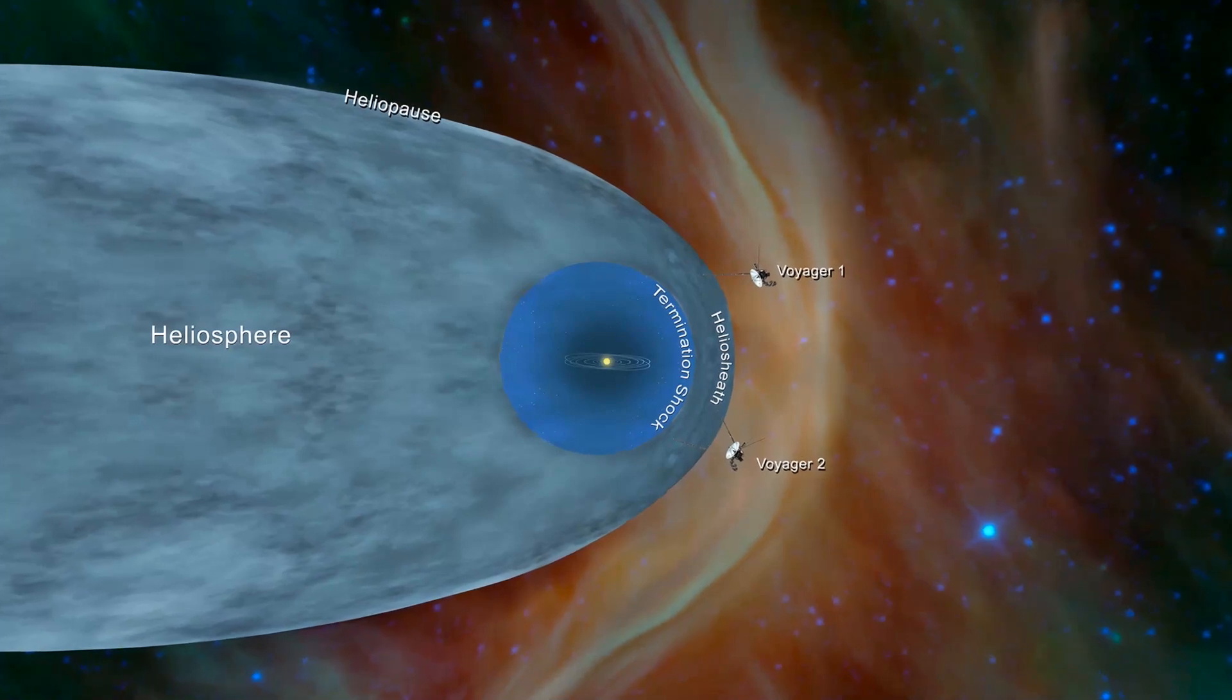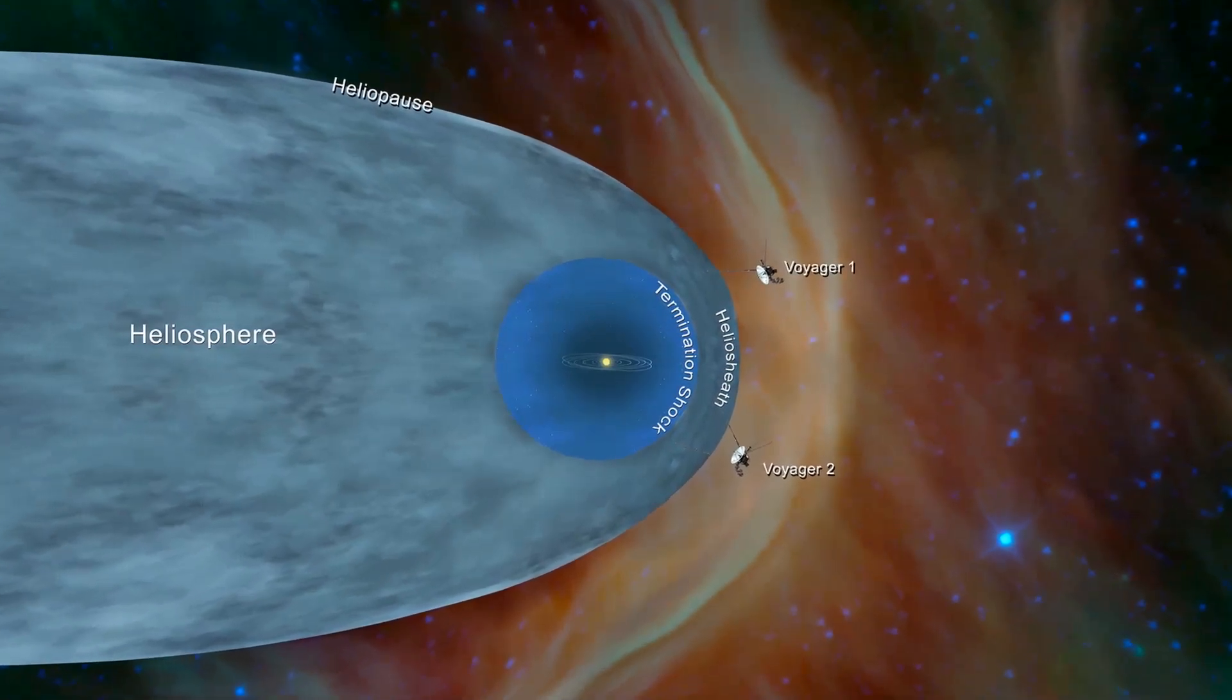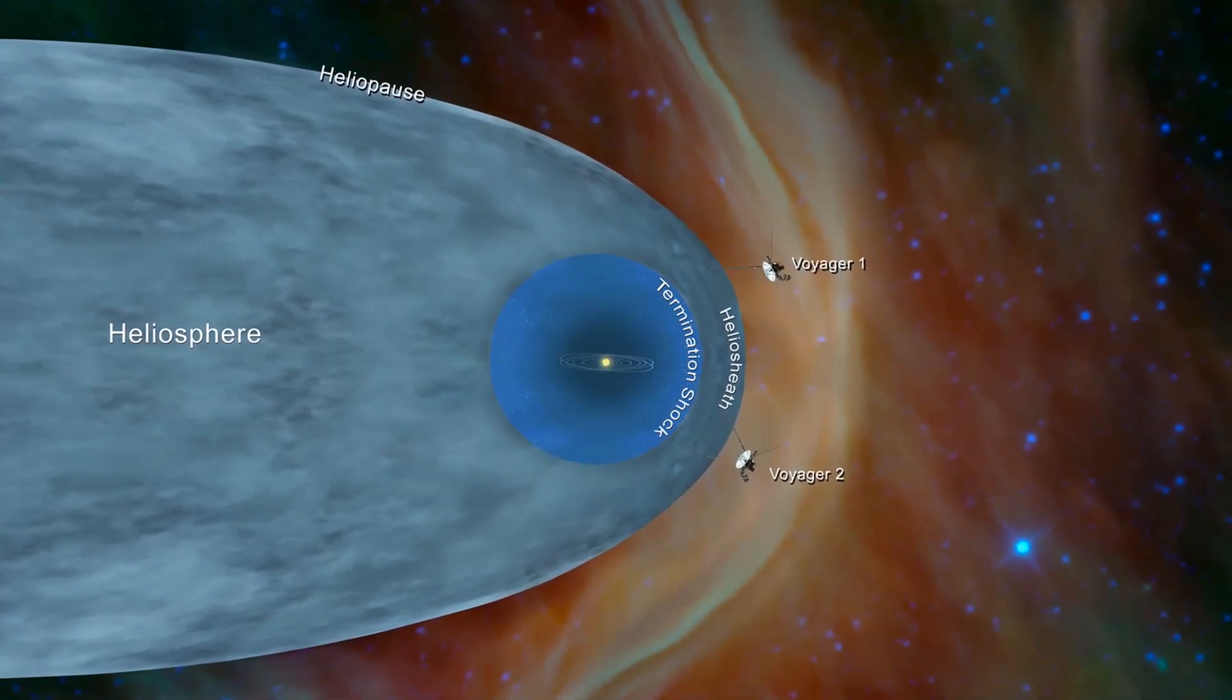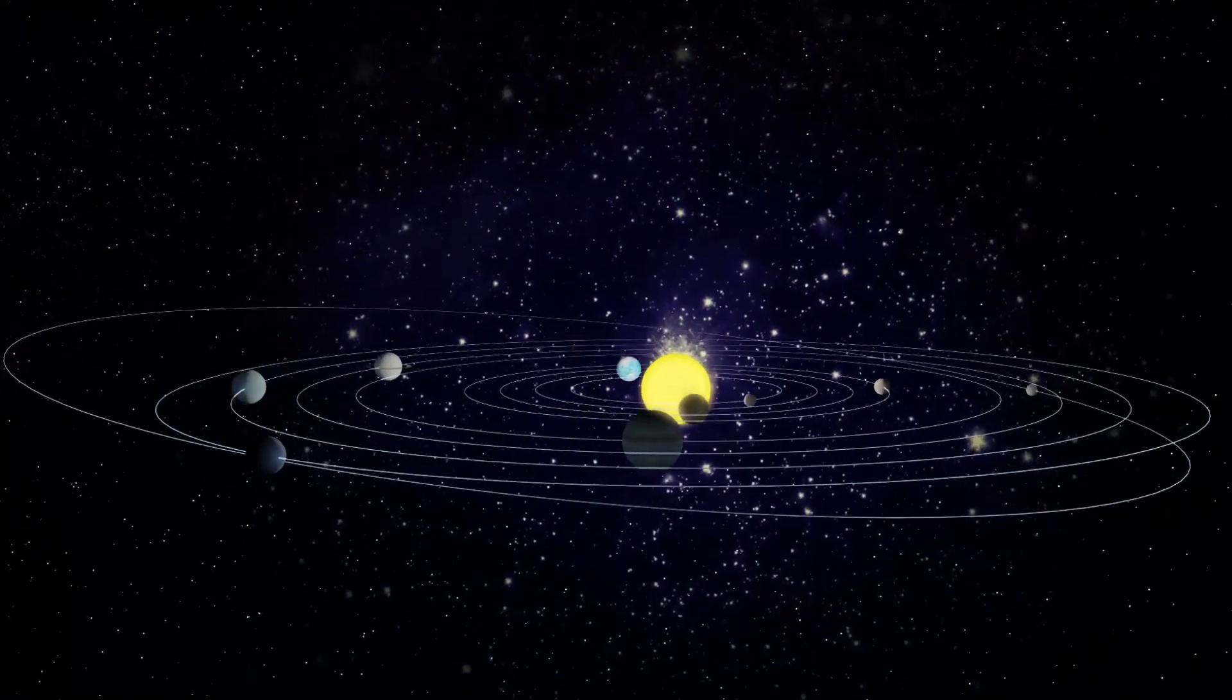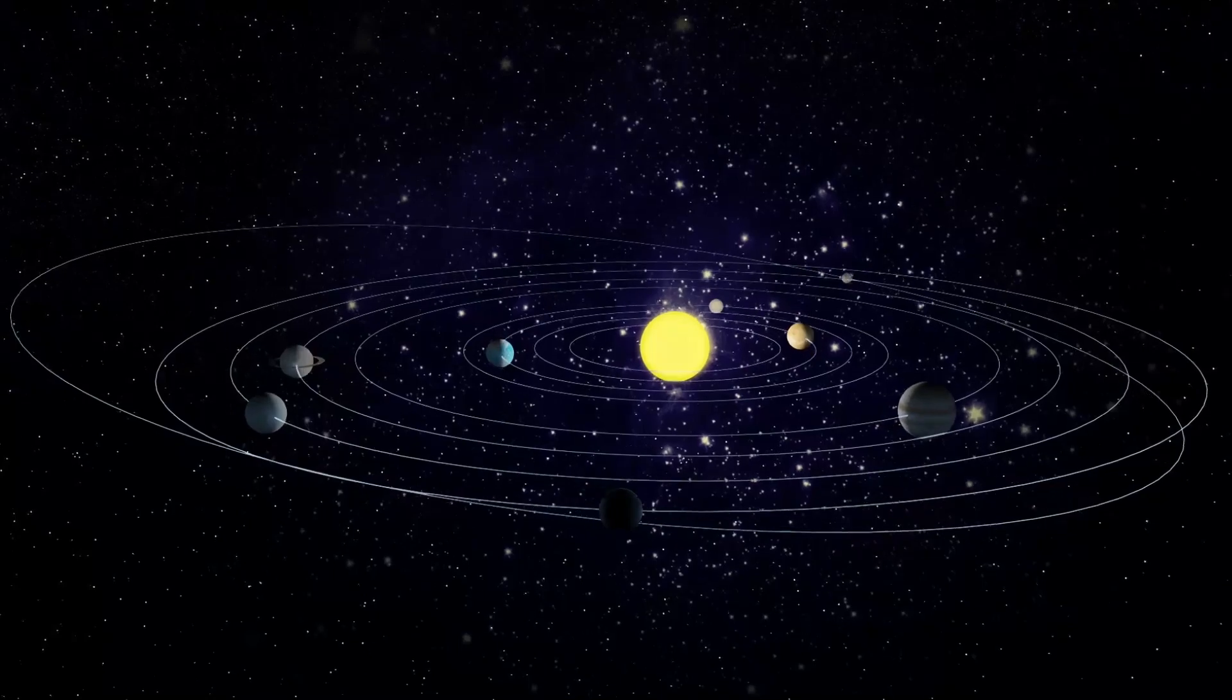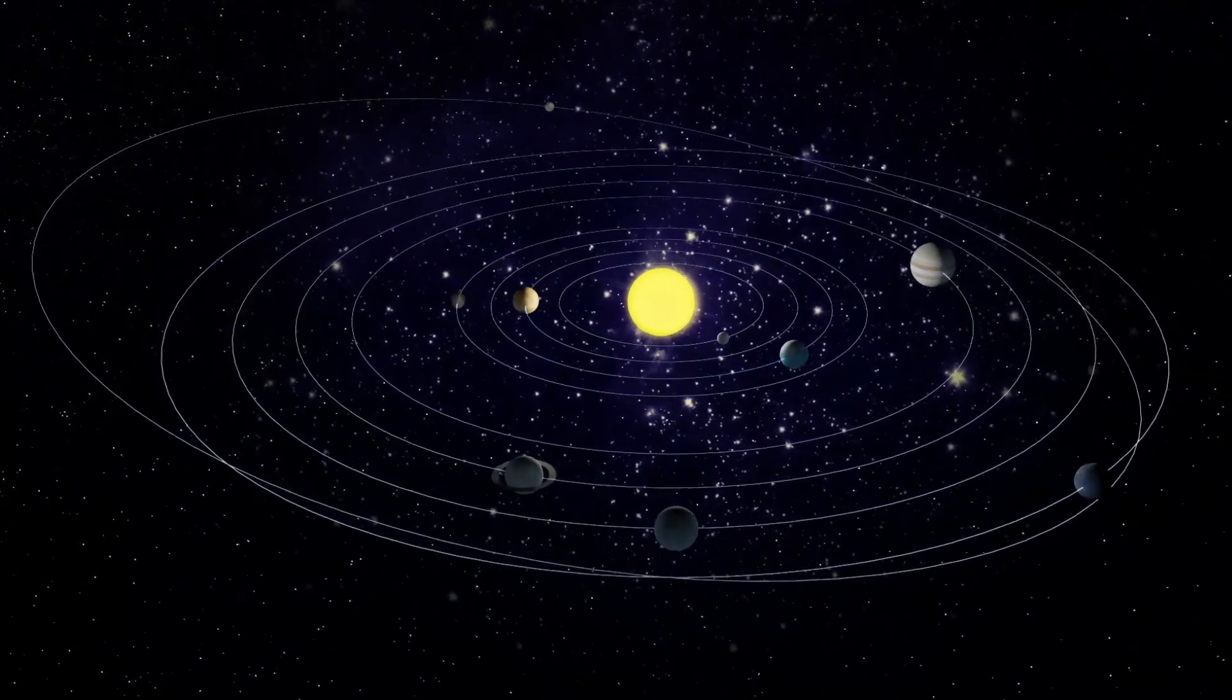Even though Voyager 2 was the first one to launch from Earth, the route it took to the stars meant that it would be the second in the race to reach the heliosphere. The scope of the mission was to study the outer part of the solar system and gain knowledge about the outer planets and their moons.